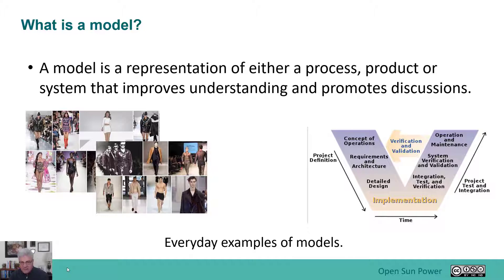Here's a model on the right-hand side called a V — it's a model of how you would develop a product, called the Systems Engineering V. So models can range from something as everyday as a runway model showing off clothing, all the way to text or diagrams that help you build a mental model of how something is done.